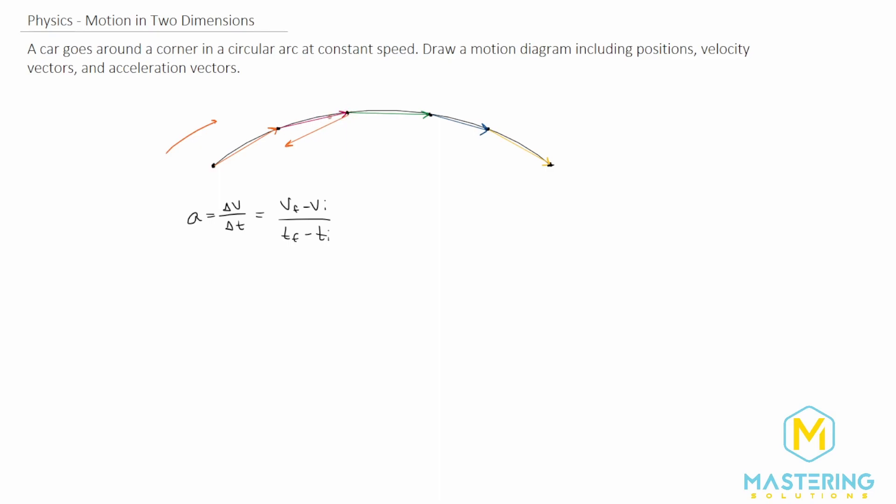So the pinkish vector, that one is our final velocity. The orange one is our initial velocity. And now we draw from the tail of the first one to the tip of the second one. So this gold arrow right here represents the acceleration vector. So you can see along the arc, the acceleration vector is going in.